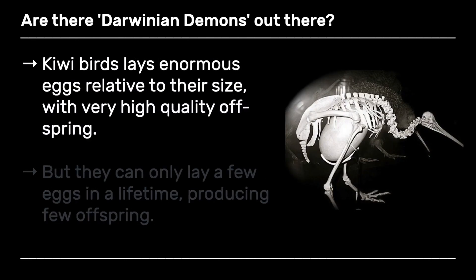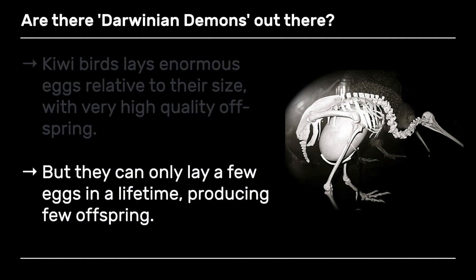Another example would be a kiwi bird. The kiwi bird lays an egg that is enormous — you can see in this figure that the egg basically occupies the entire cavity of the female. They are very high-quality with a very high survival rate. But again, far from a Darwinian demon: these birds can only lay very few eggs in a lifetime, they are not immortal, they have a limited lifespan, and they produce very few offspring overall.